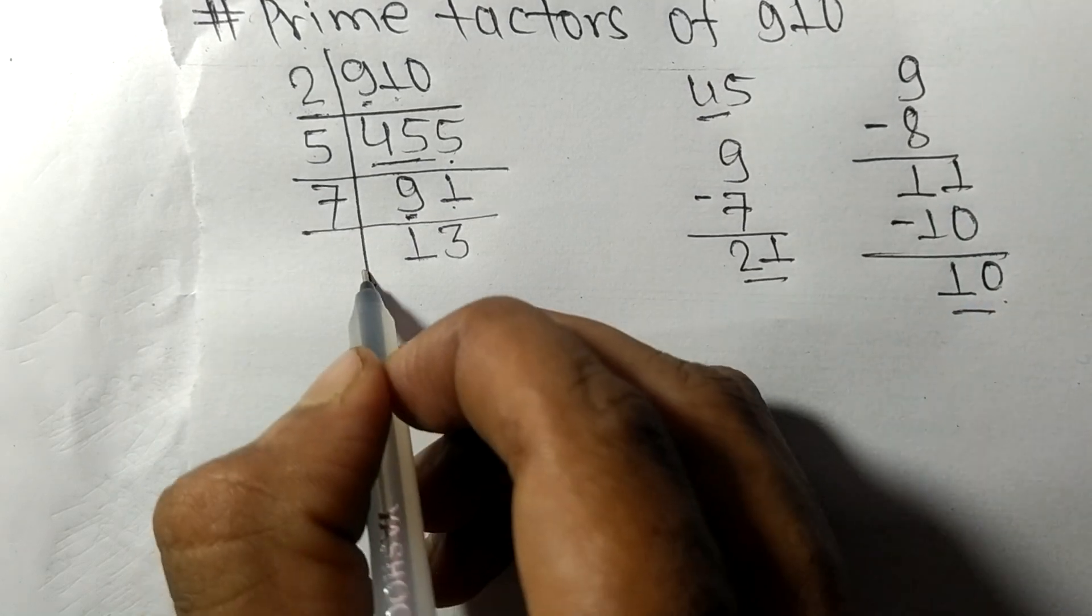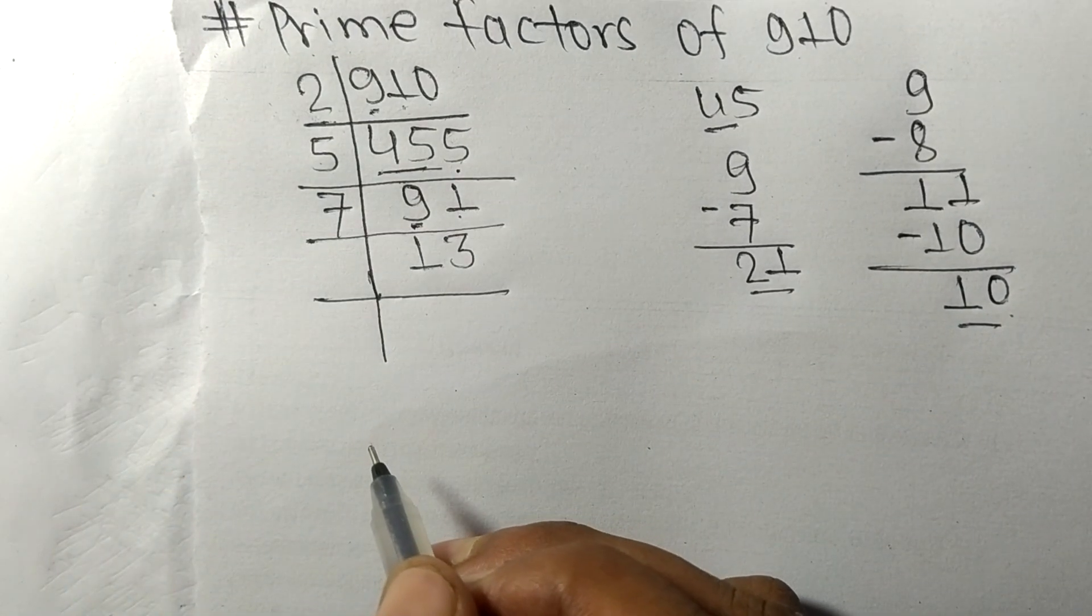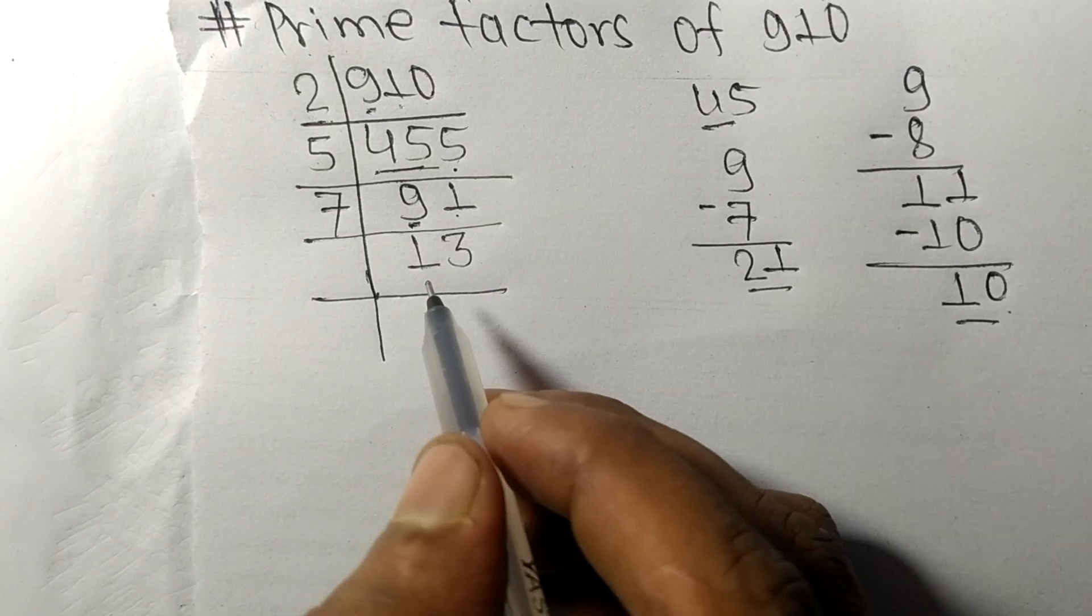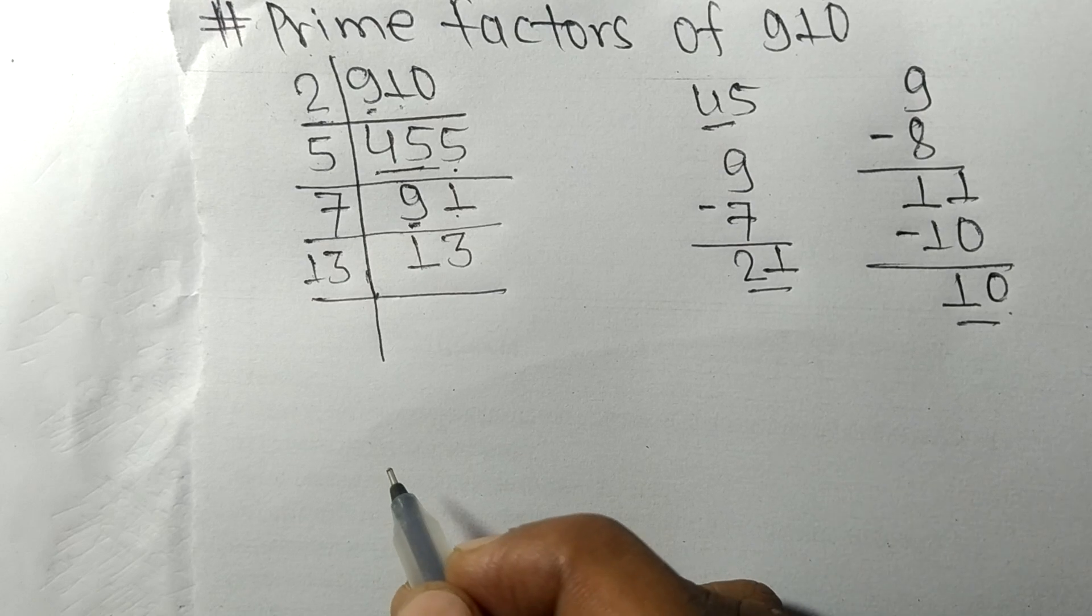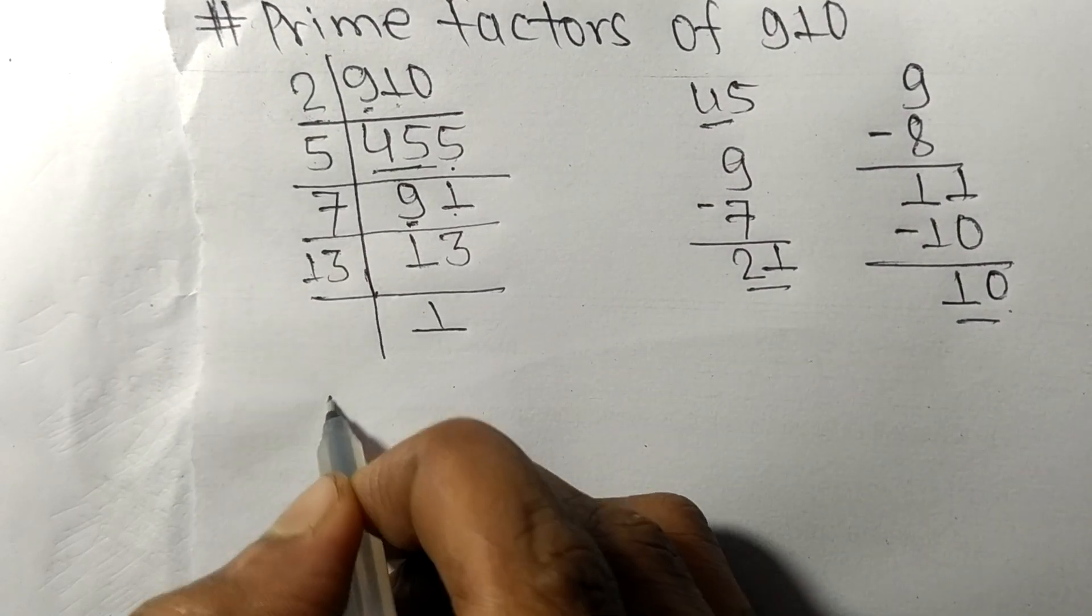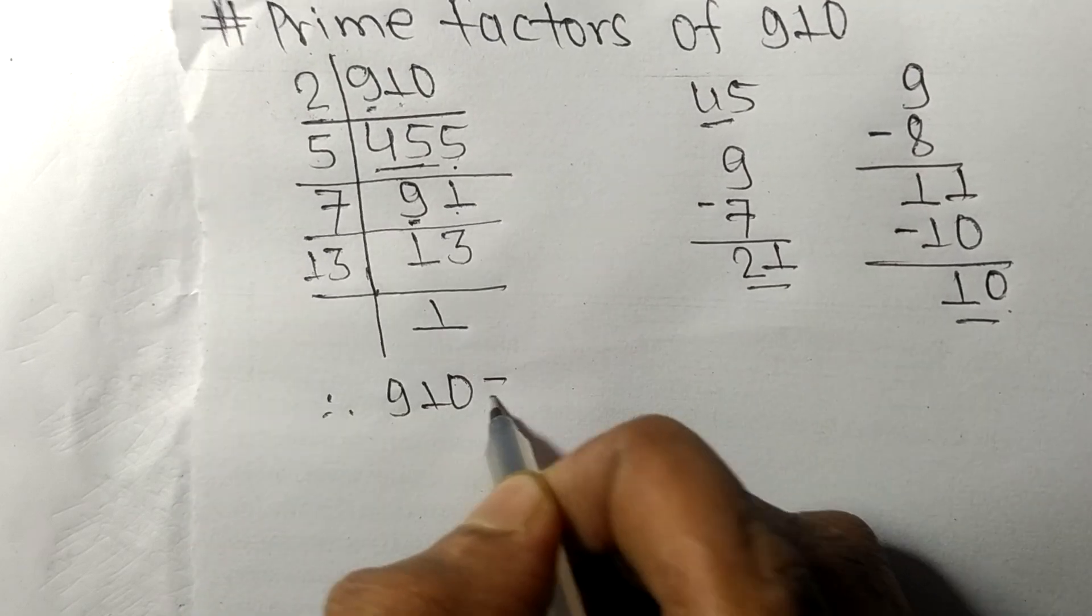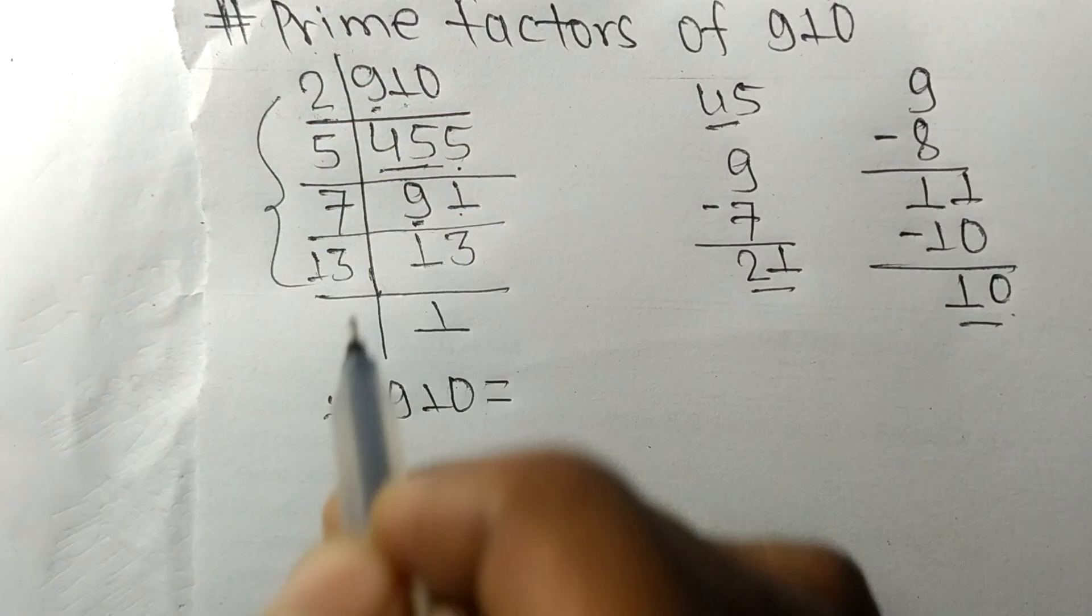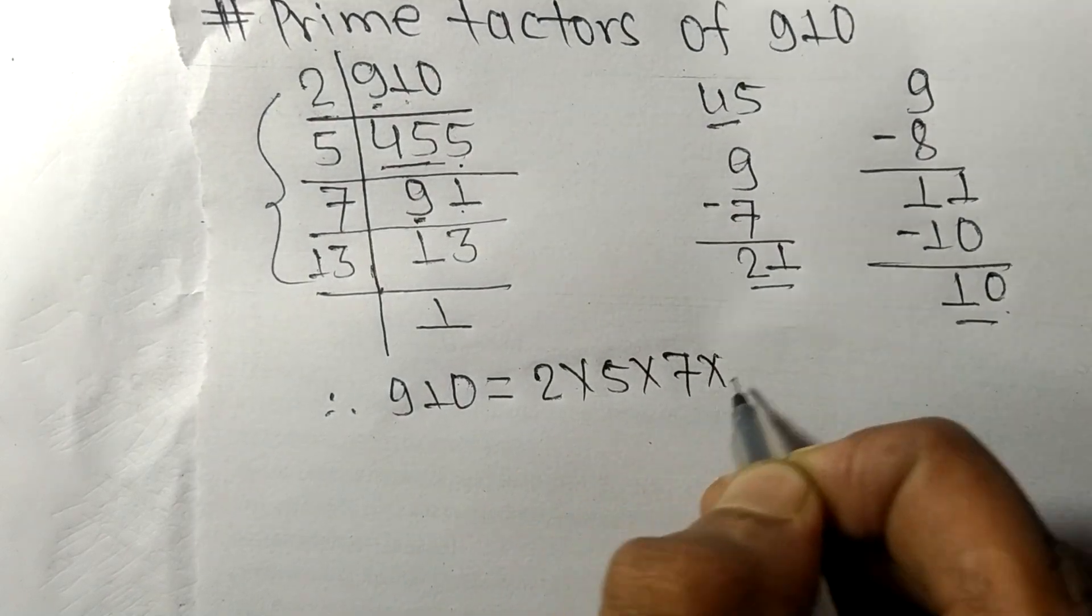Now we got 13 which is a prime number, so it is exactly divisible by 13 only. On dividing we get 1. Therefore, 910 is equal to, from this side, 2 times 5 times 7 times 13.